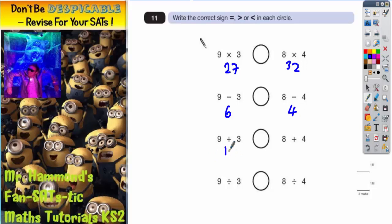9 add 3 is 12, 8 add 4 is 12 again, 9 divided by 3 is 3, 8 divided by 4 is 2.